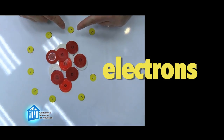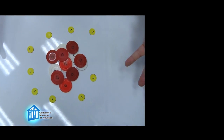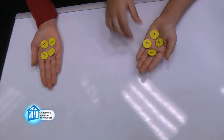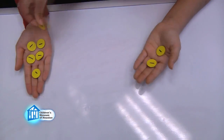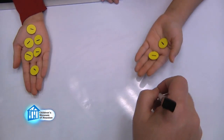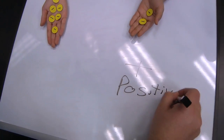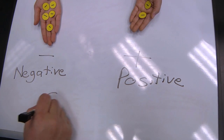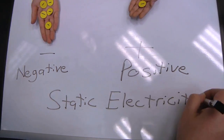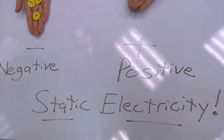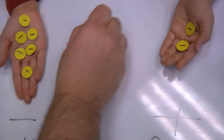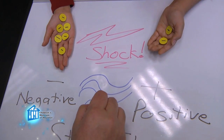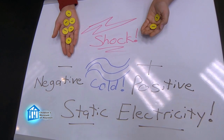And electrons are the key to understanding static electricity. When two substances rub together, like a balloon against fabric, electrons move from one substance to another. This causes the object that loses electrons to develop a positive charge, and the object that gained electrons to develop a negative charge. That difference in charge is static electricity. And when the electrons jump from the negative charge to the positive charge, that's the shock you get. The cold temperature helps because the air is drier — humidity makes it hard to build a static charge.